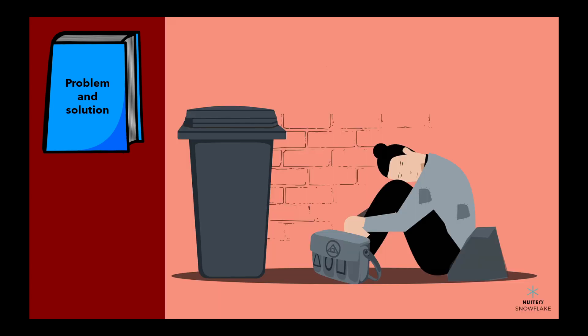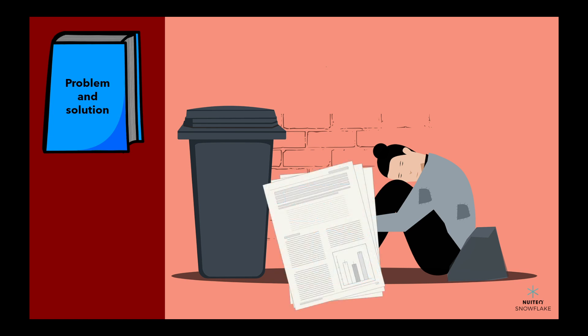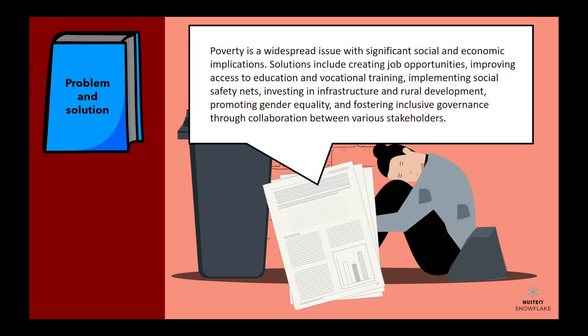For example, when we read about poverty, we learn about the problem of lack of resources and opportunities, and what can be done to solve it, such as creating jobs.